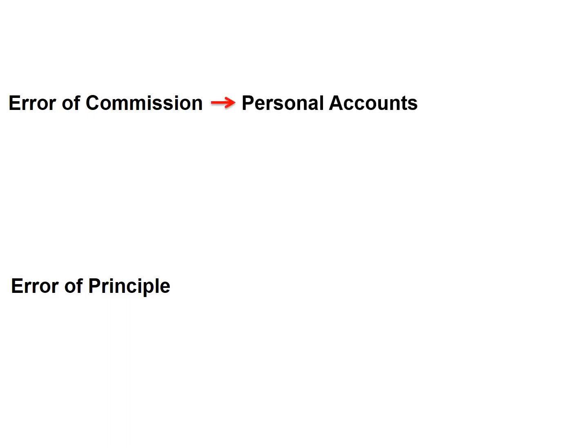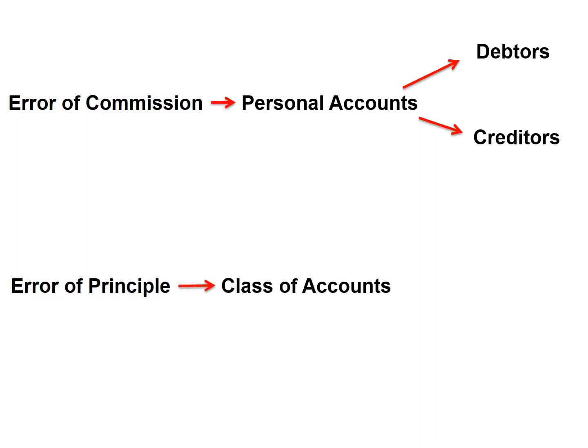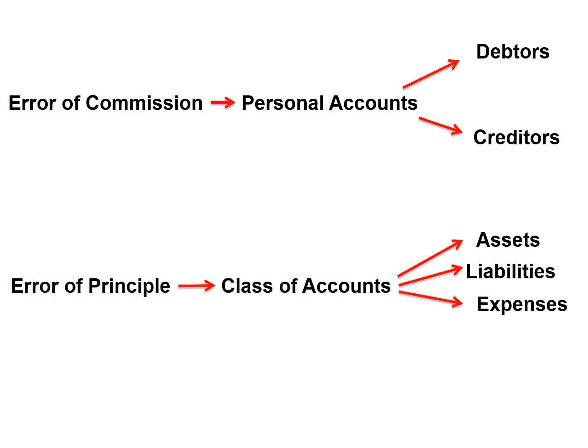There is a difference between the error of commission and the error of principle. The error of commission deals with personal accounts, which contains your debtors and your creditors. While the error of principle deals with the class of accounts — assets, liabilities, expenses, and income.